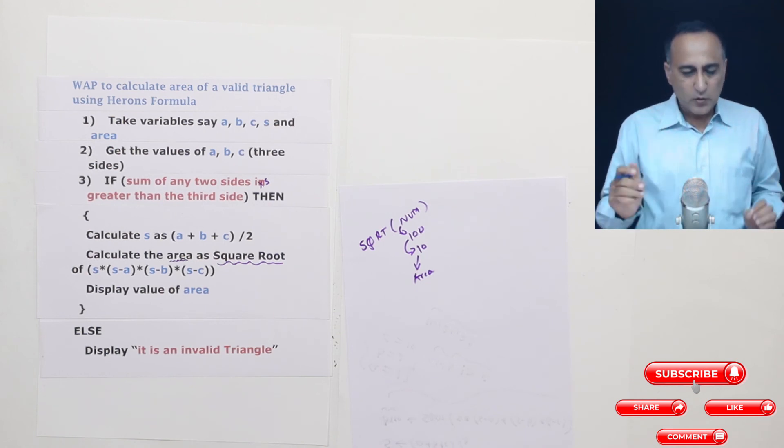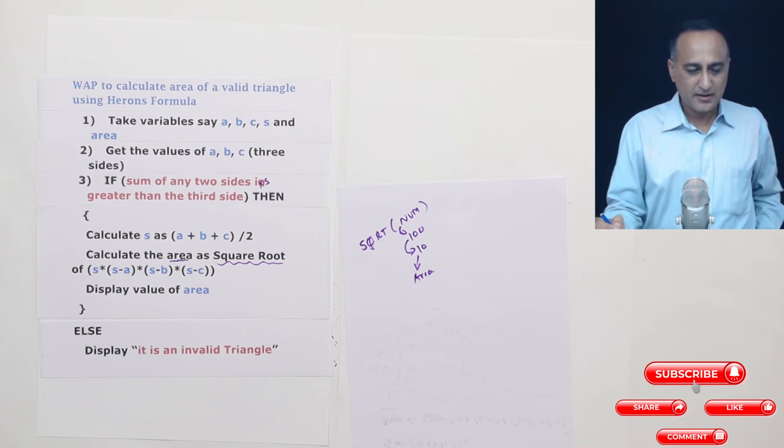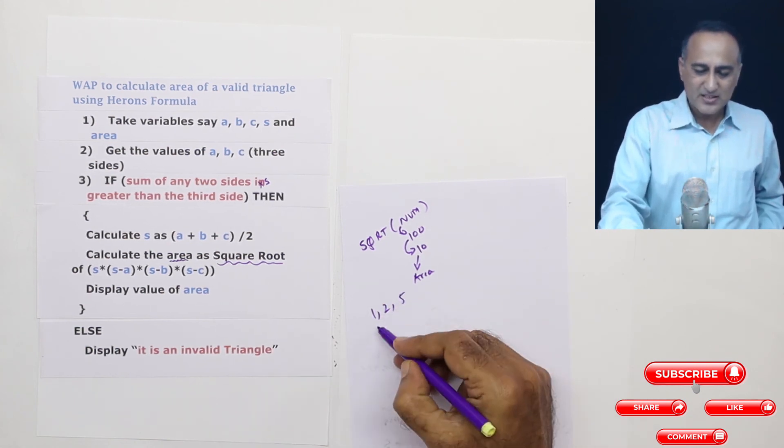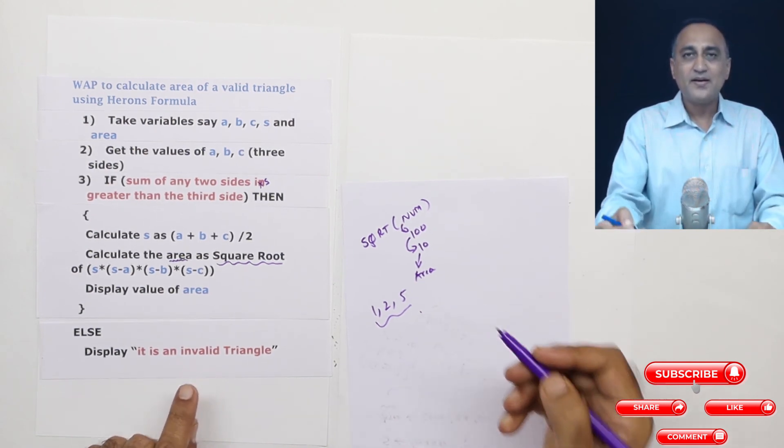So this is how we're going to calculate the square root of this, dump it to area and display the area. And as I told you earlier if I enter 1, 2 and 5 this is not a valid triangle. In that case it's going to display this message it is an invalid triangle.